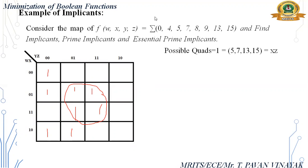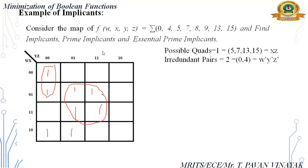Quads are finished. Now find pairs. I am finding one pair: 0 and 4. That expression is W̄ȲZ̄. Next, another pair I am considering: 8 and 9. The expression for that is WX̄Ȳ.